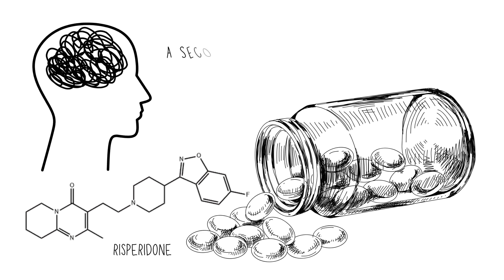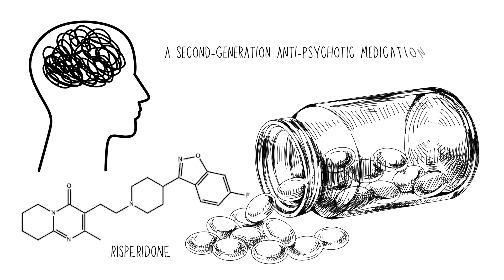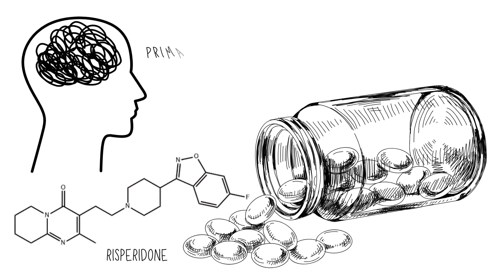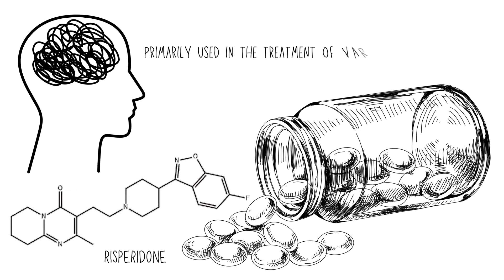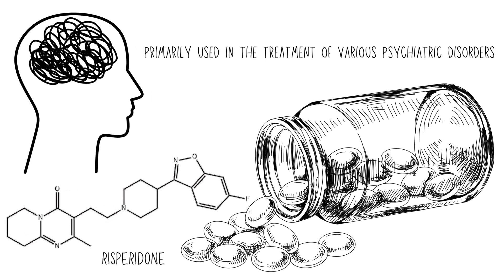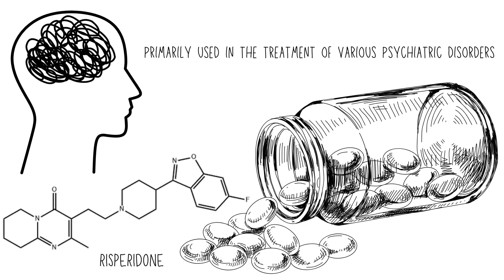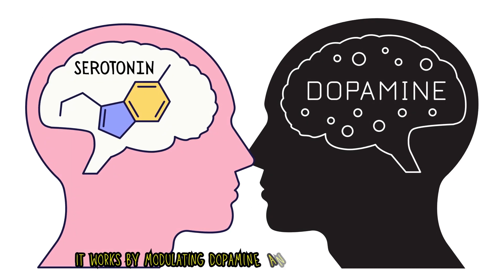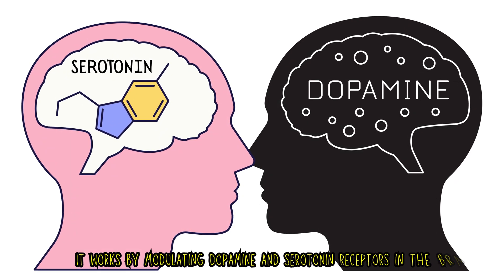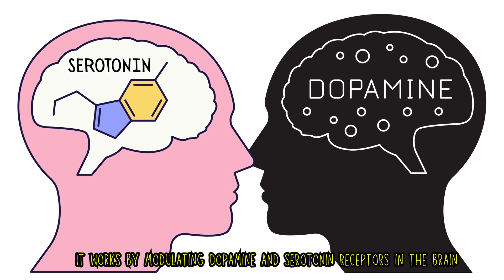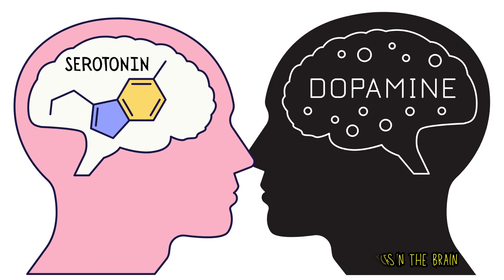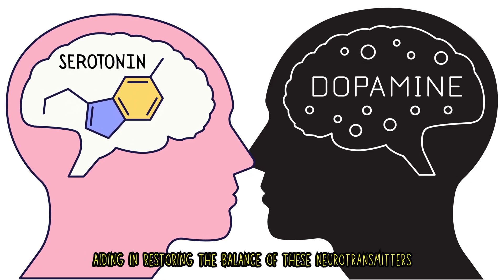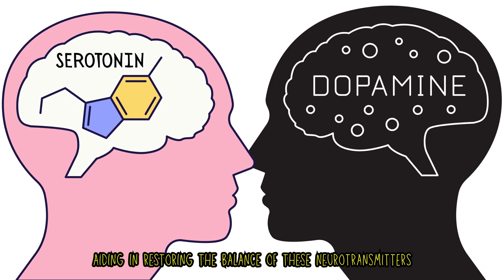Risperidone is a second-generation antipsychotic medication primarily used in the treatment of various psychiatric disorders. It works by modulating dopamine and serotonin receptors in the brain, aiding in restoring the balance of these neurotransmitters.